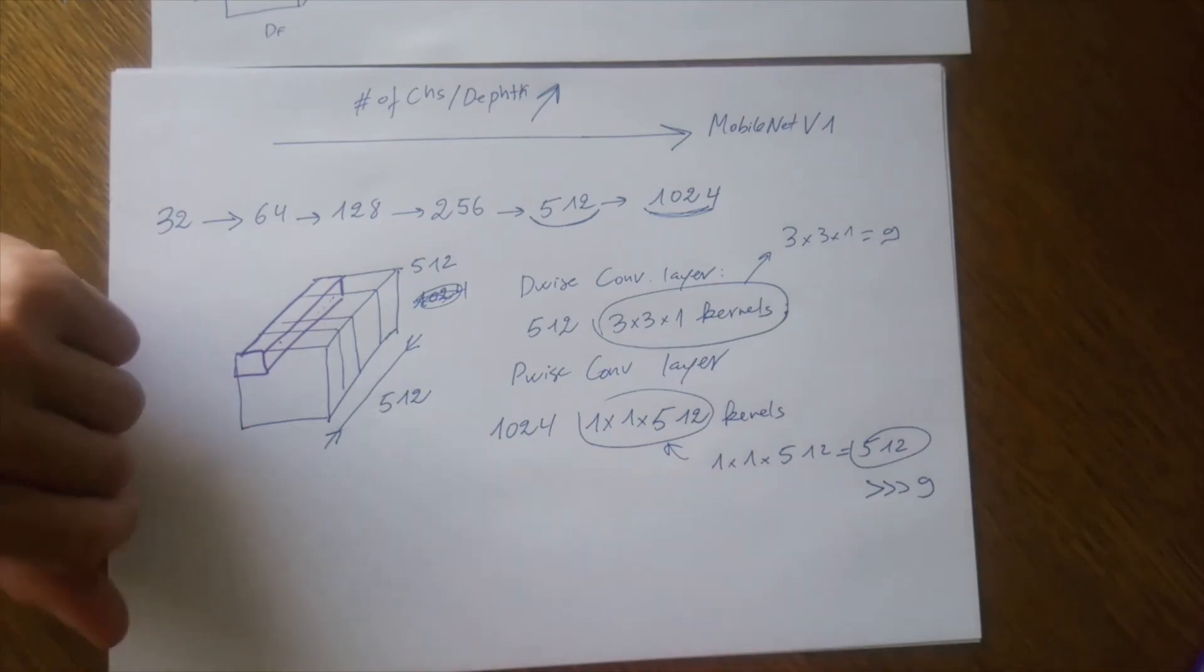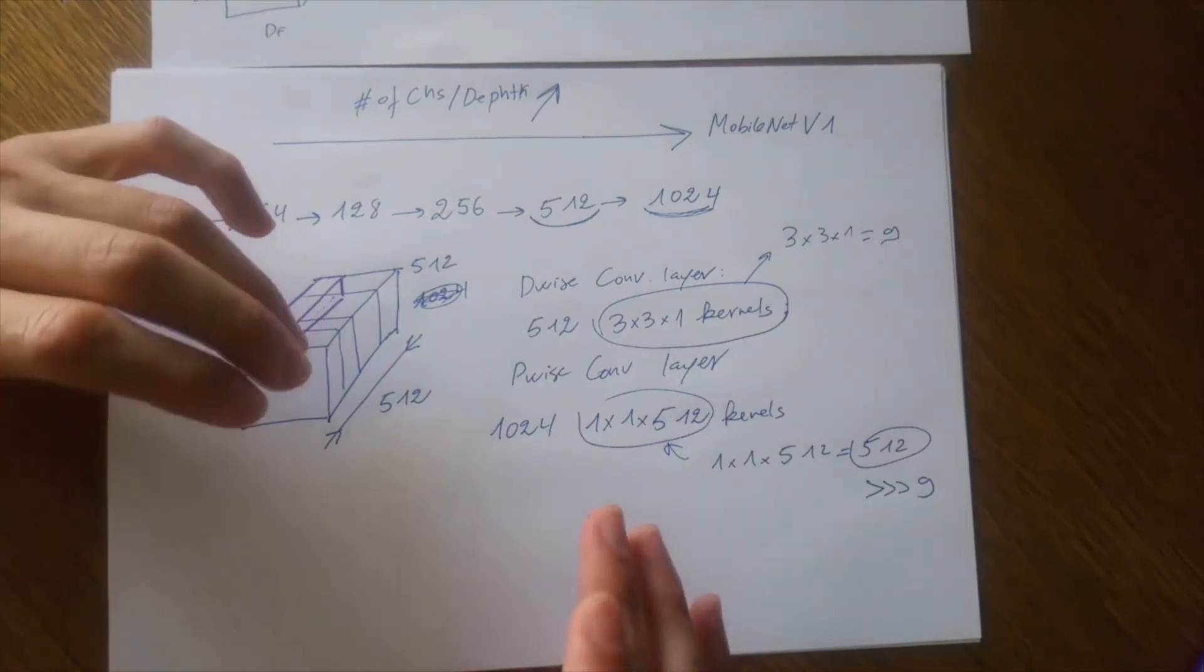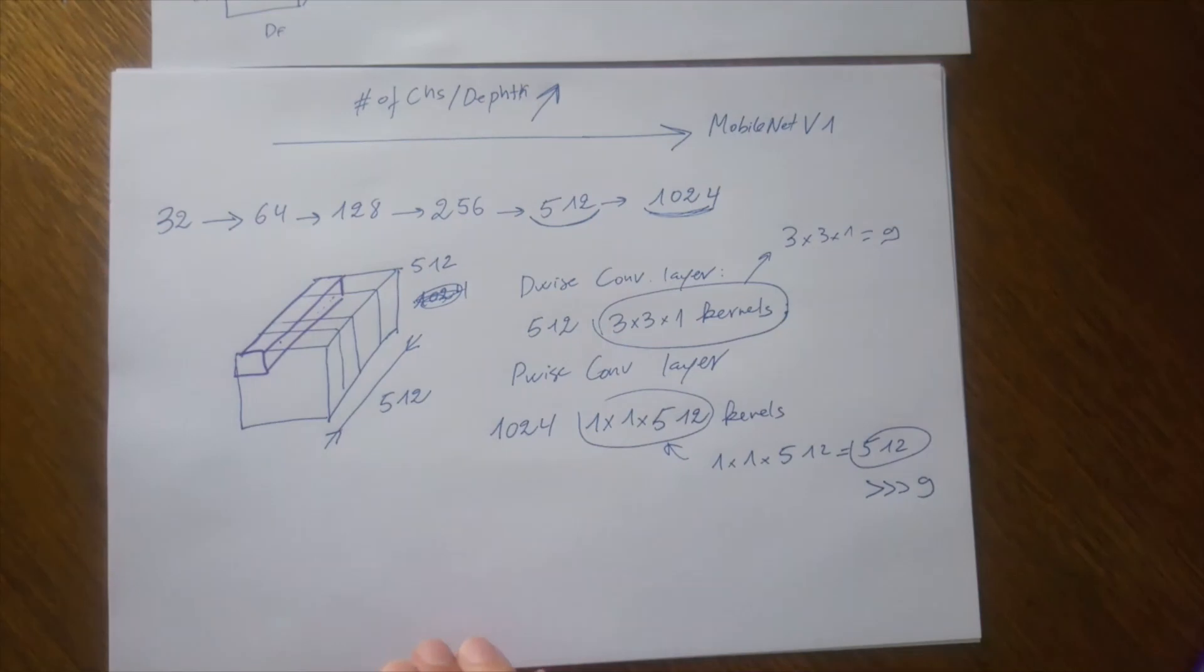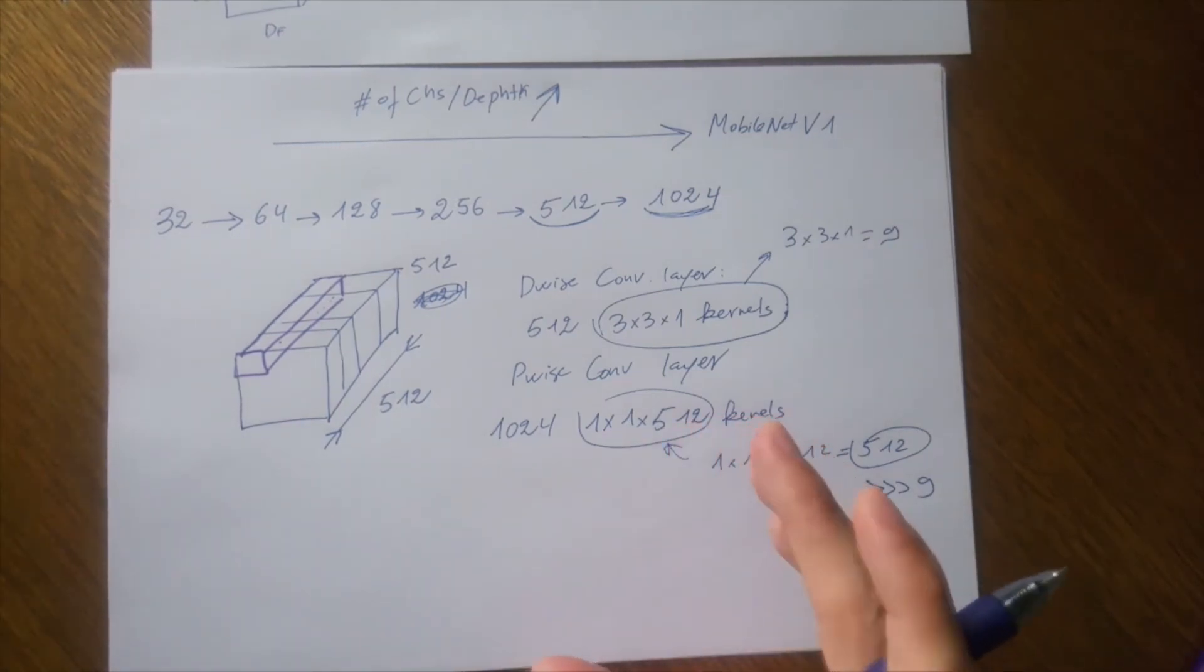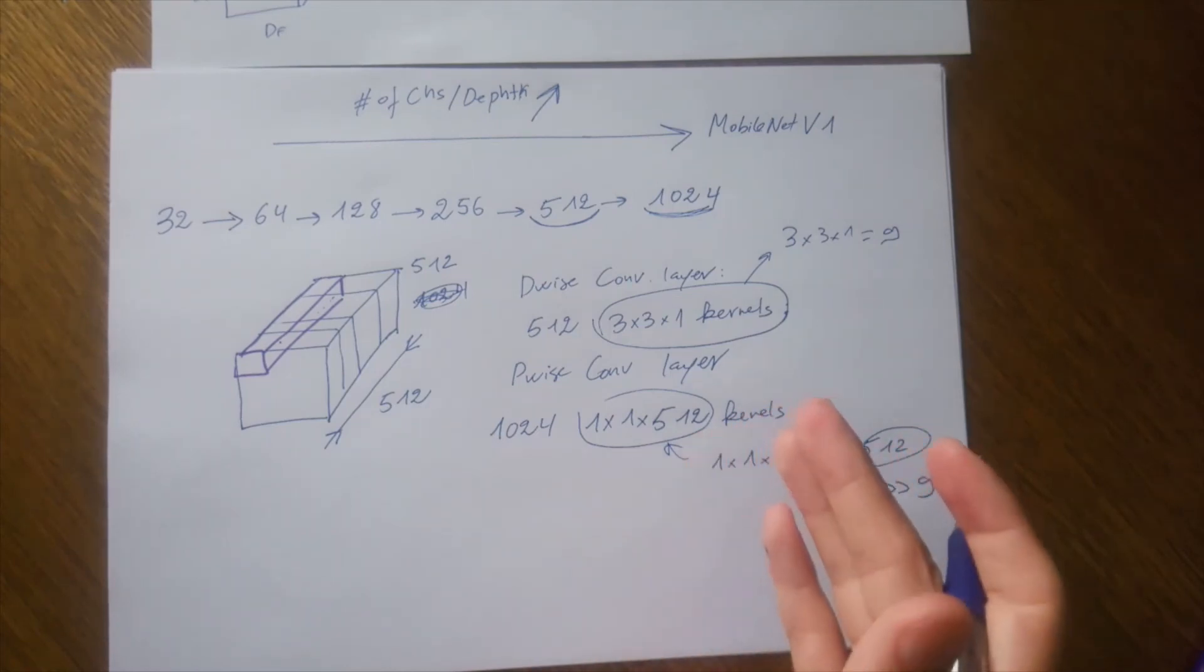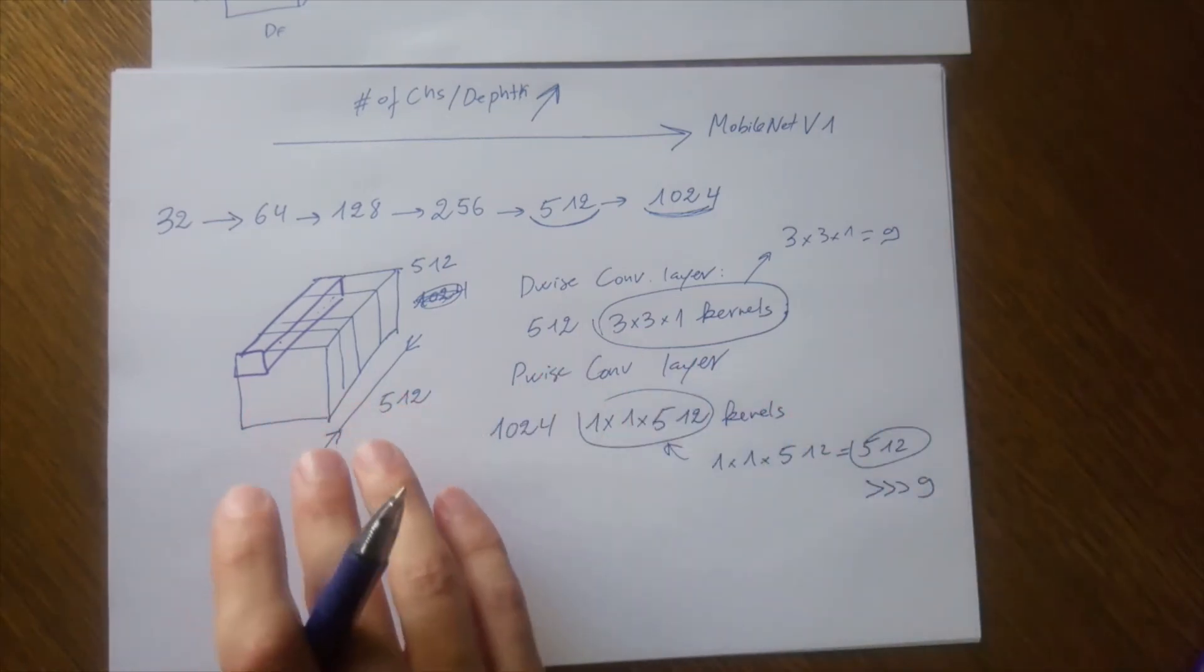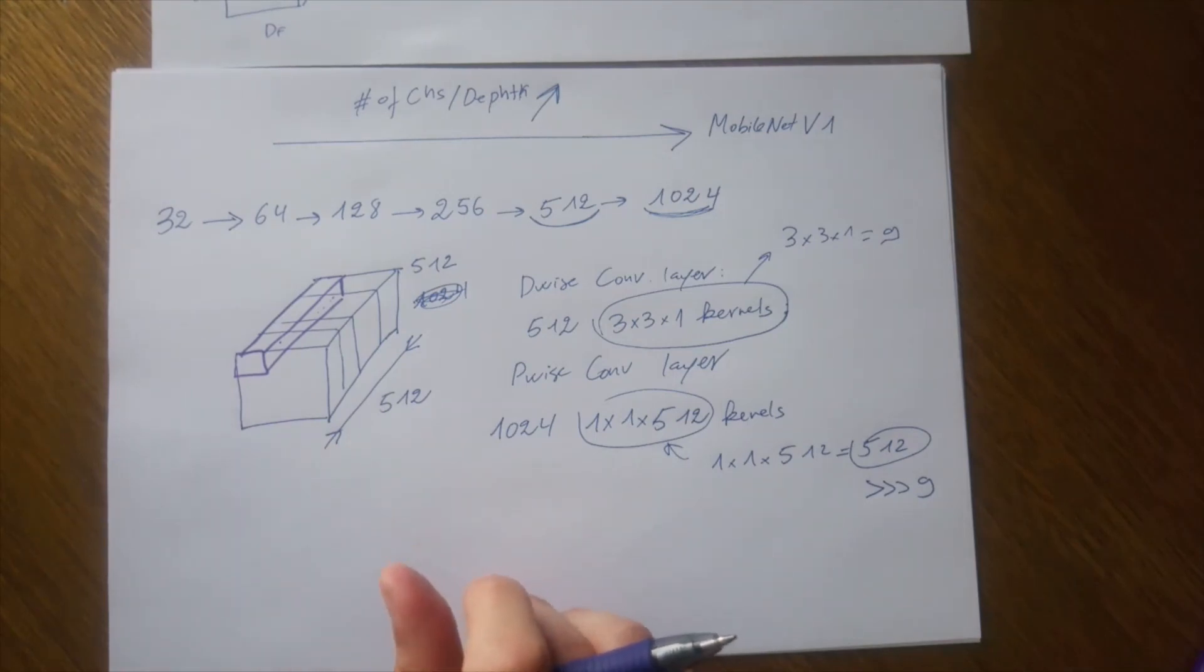However, I do not think that separating or factorizing spatial dimensions is useless for two reasons. The first reason is that authors of MobileNet V1 do not seem to provide quantitative measures of the trade-off of factorizing the spatial dimensions. Moreover, there are at least two works, previous works, that factorize the spatial dimensions. So I think that the question of whether this is useful or not is questionable.